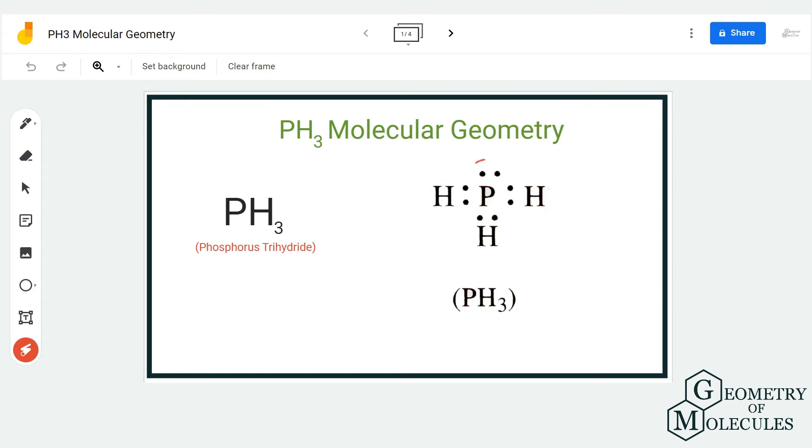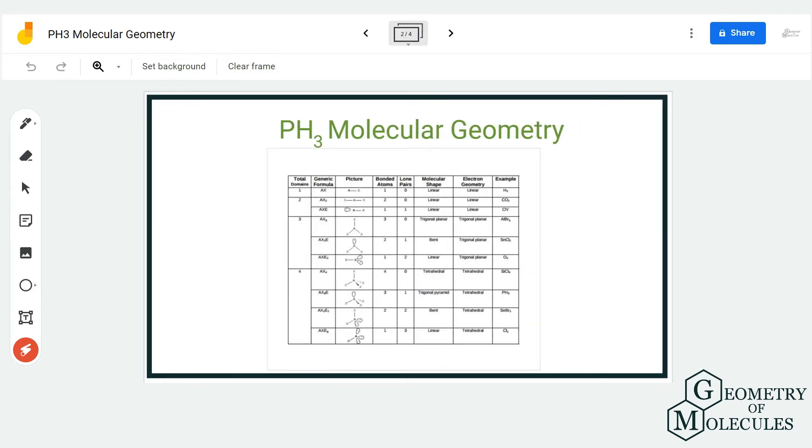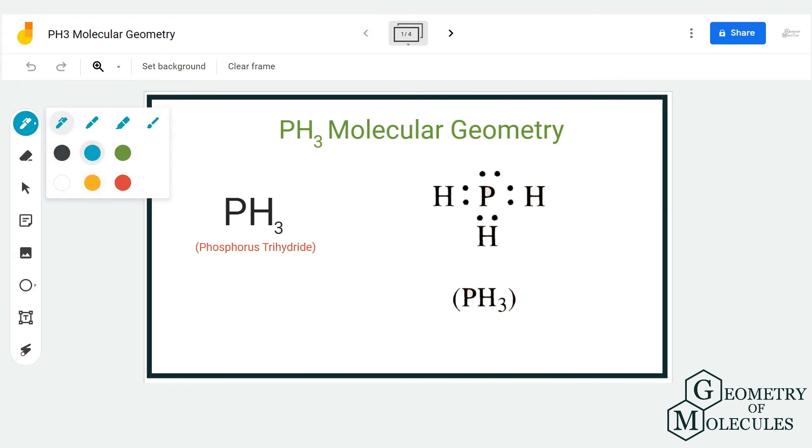To find out the steric number, you basically need to count the number of electron regions around it. As it is bonding with three hydrogen atoms, that's three, and there is one lone pair over here, so four. The steric number of this molecule is four.